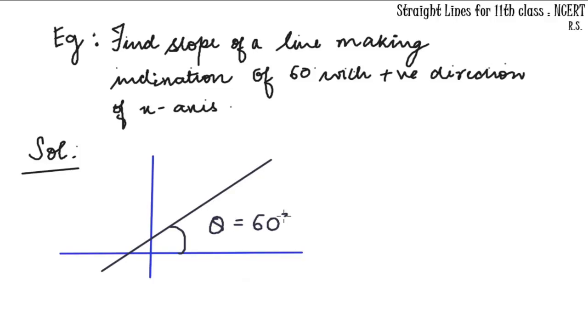What is slope of line l here? It is equal to tan of theta, which is equal to tangent of 60 degrees. ml is the slope of line l, which equals tan theta equals tangent of 60 degrees. The value of tan 60 degrees is √3, so the slope comes out to be √3.